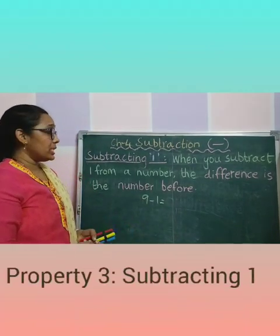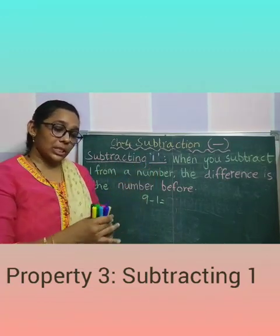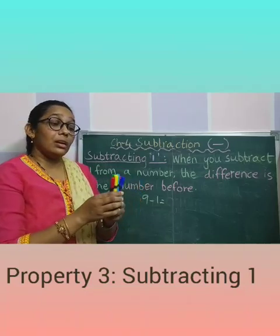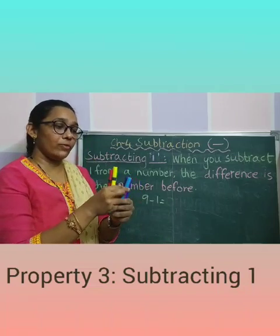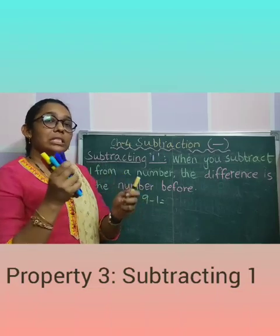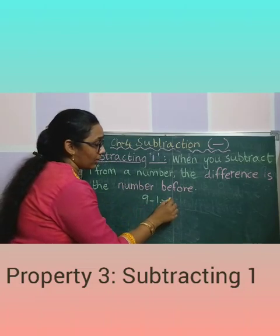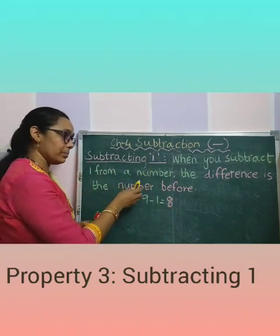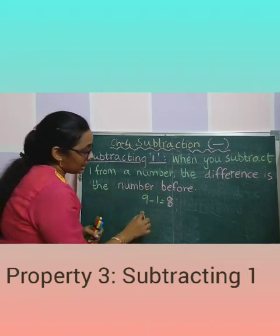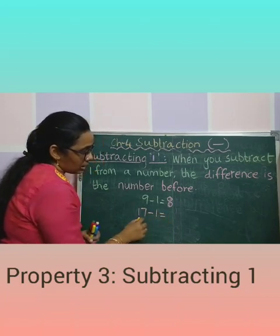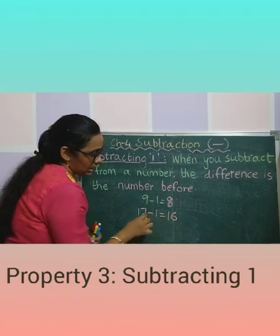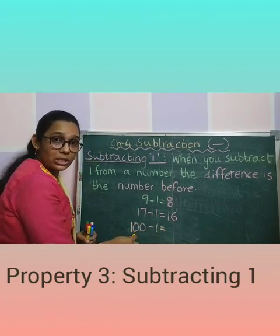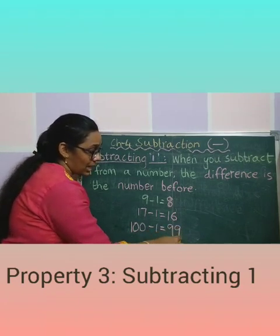Property 3 — third property: subtracting 1. The same color pens — we have 9 and I am taking away 1. How many remaining? 1, 2, 3, 4, 5, 6, 7, 8. So 9 minus 1 gives you 8 — it gives you the number before. When you subtract 1 from a number, the difference is the number before. 17 minus 1 gives you 16 — the number before 17 is 16. 100 minus 1: what is the number before 100? That is 99. Did you understand, children?